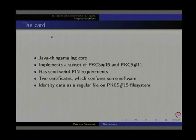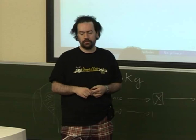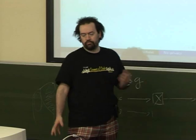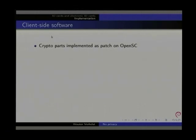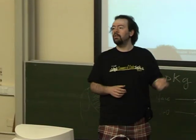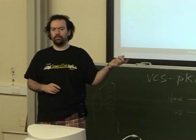The identity data is just a regular file on the PKCS15 file system — you can read that with just PKCS15 calls and interpret it. The format of the file is specified in the card specification. For the client-side software, there is software provided with the card which you can download from the government website. The cryptographic parts are implemented as a patch on OpenSC — Open Smart Cards Framework, which is free software for smart cards. There is a belpic driver which is able to communicate with this specific card.